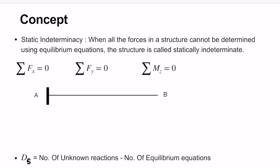The equations of equilibrium are: summation of force in the X direction equals zero, summation of force in the Y direction equals zero, and summation of moment at a point equals zero. For example, consider a cantilever beam AB. Let us find the number of unknown reactions. At point B, will there be any reaction? No, because a reaction only generates when there is a restraint to motion, and point B is unsupported.